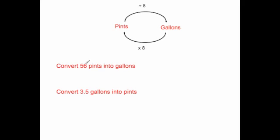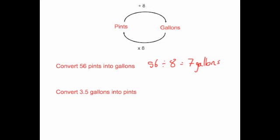Let's have a look at some examples. Convert 56 pints into gallons. To go from pints to gallons you divide by 8. So we've got 56 pints, and we're going to divide that by 8. 56 divided by 8 is 7, so that would be 7 gallons.